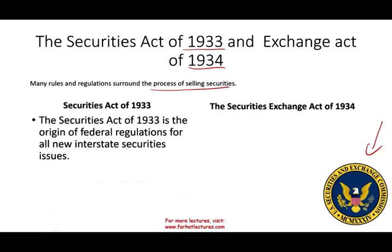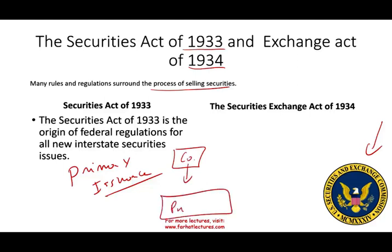The 1933 Act is the original federal regulation for all new interstate securities — this is called the primary issuance. It governs when a company sells stocks to the public, with the public giving money back to the company to operate. This is the 1933 Act.